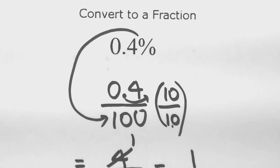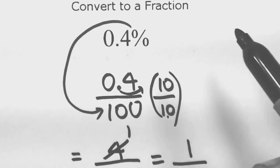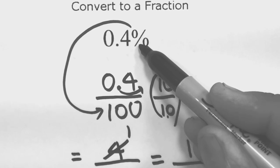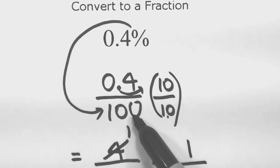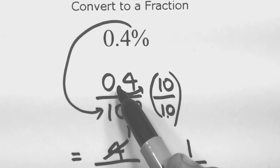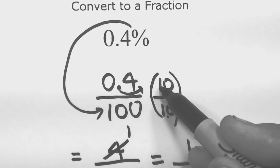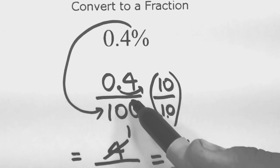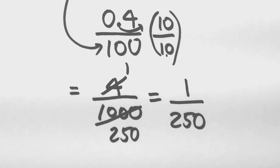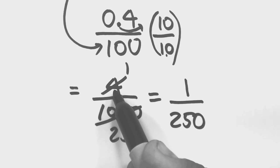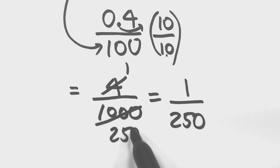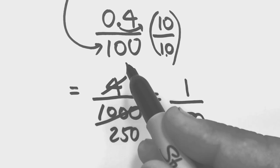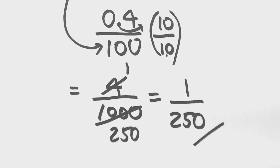To review: take the percent sign and trade it in for over a hundred. Since we had a decimal value — only one decimal place — we multiplied both top and bottom by ten, which equals one, so it doesn't change the value but moves the decimal point one place right. We got four upstairs and a thousand downstairs, then reduced top and bottom by four to get one over two hundred fifty.